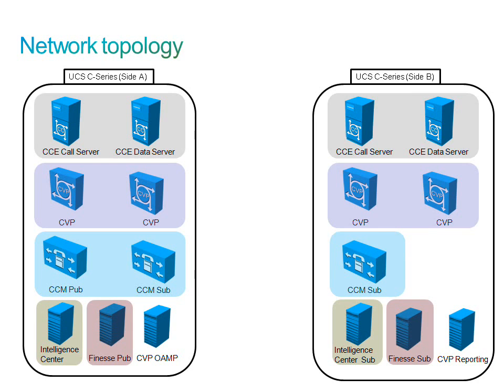The UCCE call server and data server contain the call routing and ACD components of the Package CCE solution. These components must work in concert with each other and remain equalized at all times to provide carrier-level fault tolerance. Therefore, these servers must have a private network. This private network, using a separate network interface, is used for private communications between the same-side call server and data server, as well as communications between the duplex pairs. This ensures that if any of these components fail, the system will continue to route calls without interruption.